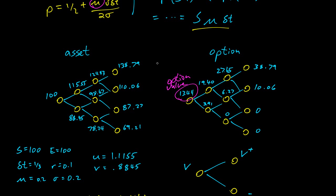So that's how you solve and value an option using the binomial model. The tricky thing is you have to use the risk neutral expectation — counterintuitive, but it's starting to make more sense. Cool stuff.